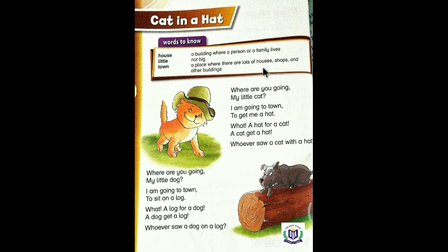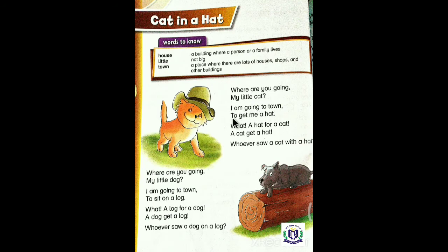Aik aisi jaga jahaan per bohut saare ghar hon, dukane aur dousri amarat hon. Let's start the translation. Where are you going, my little cat? Tum kahaan ja rahi ho meri choti billi? I am going to town. Mein shahir ja rahi hoon.